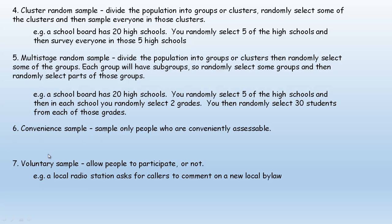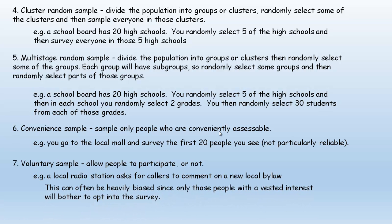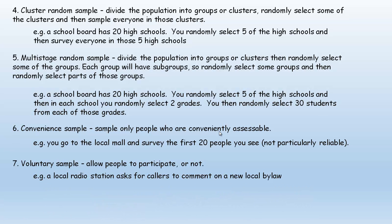Six and seven are quite different from the first five. A convenient sample is where you sample only people who are conveniently accessible. For example, you go to the mall and survey the first 20 people you see. This method is not particularly reliable, although it is fast and very cost-efficient — a cheap way to get opinions, but not terribly accurate much of the time.